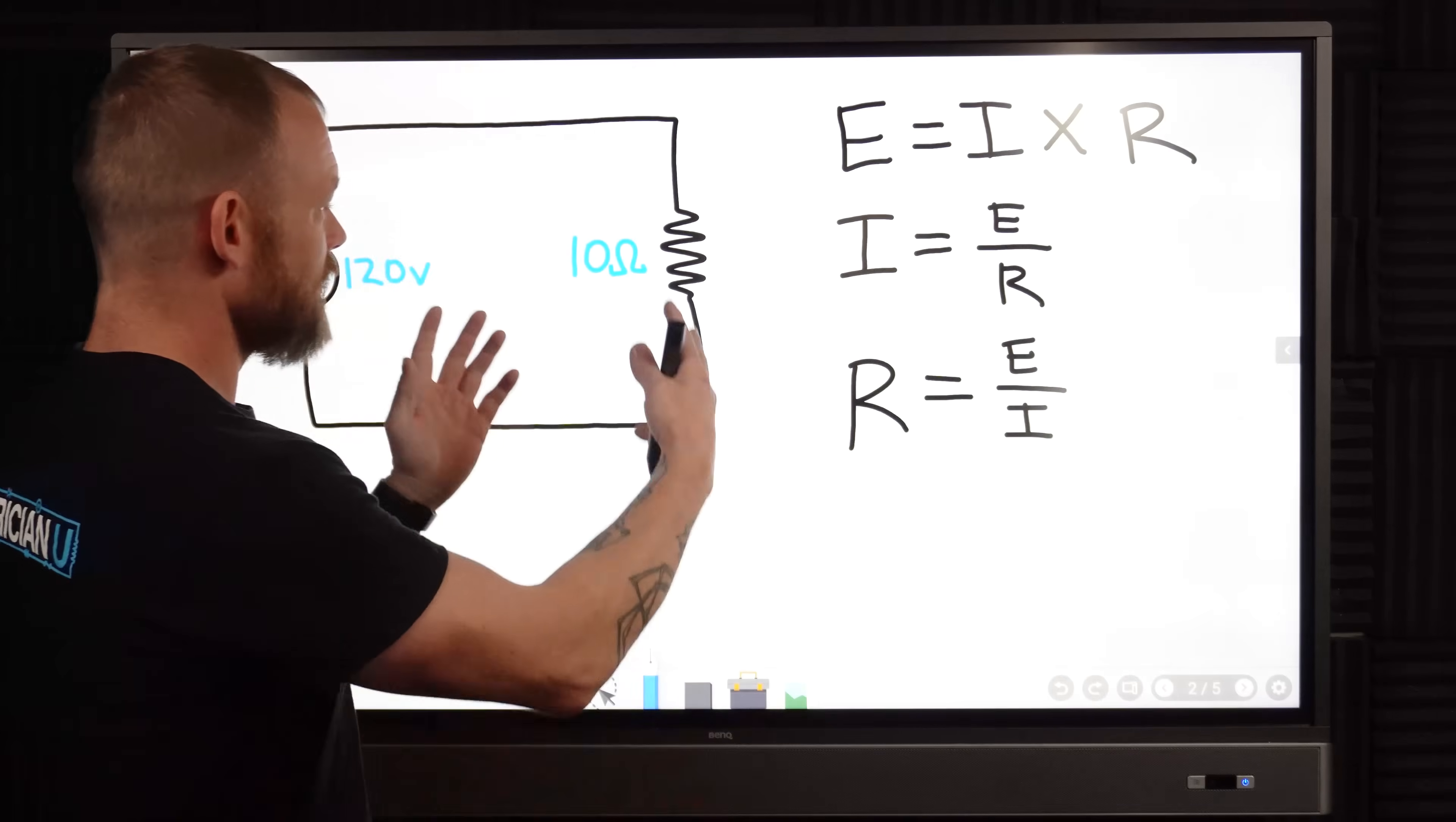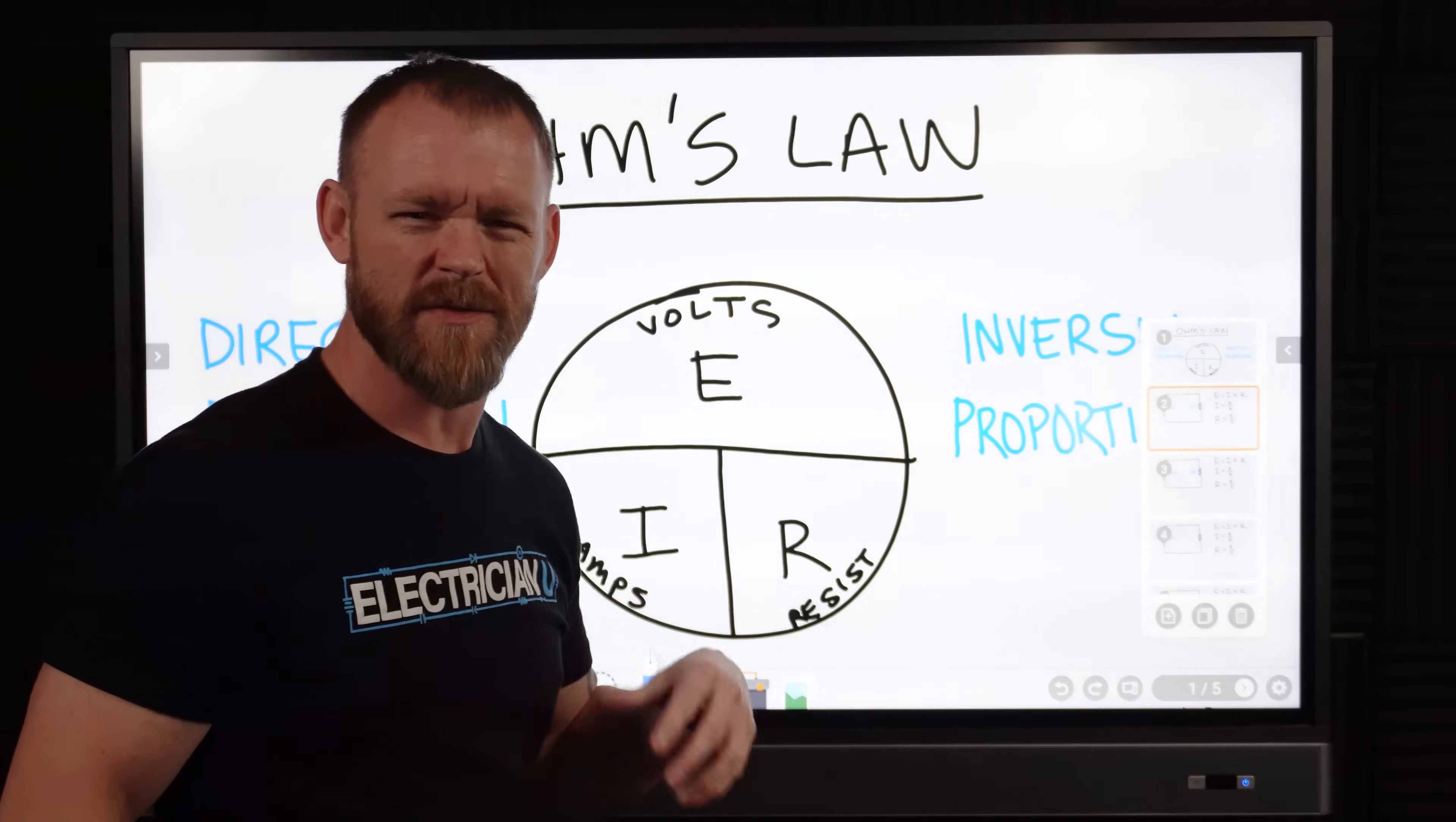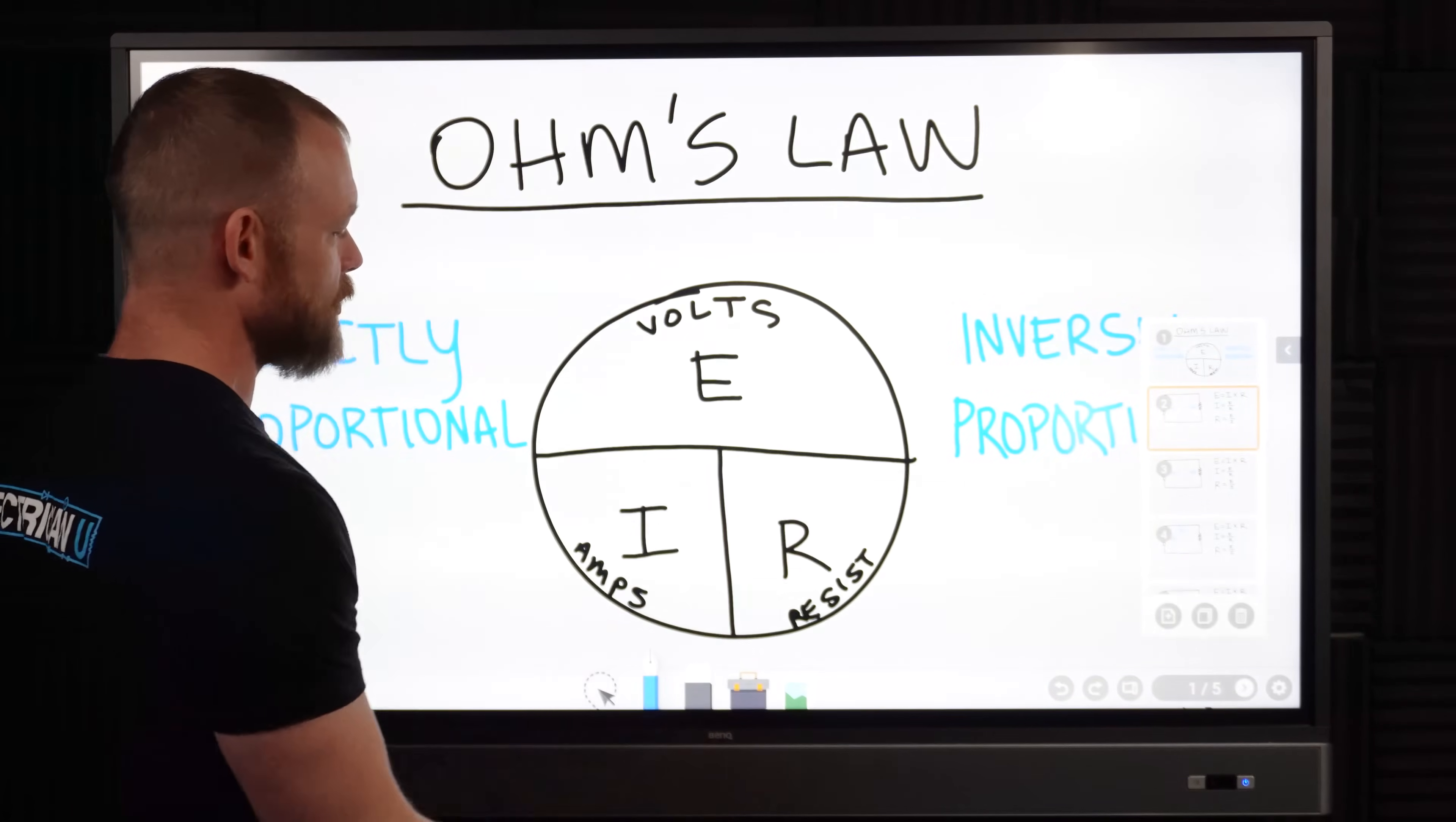We've got our Ohm's law right, so E equals I times R is Ohm's law. If we go back here, this is the wheel that we use visually to not have to worry about the craziness of the math. It's not that crazy but it helps people.